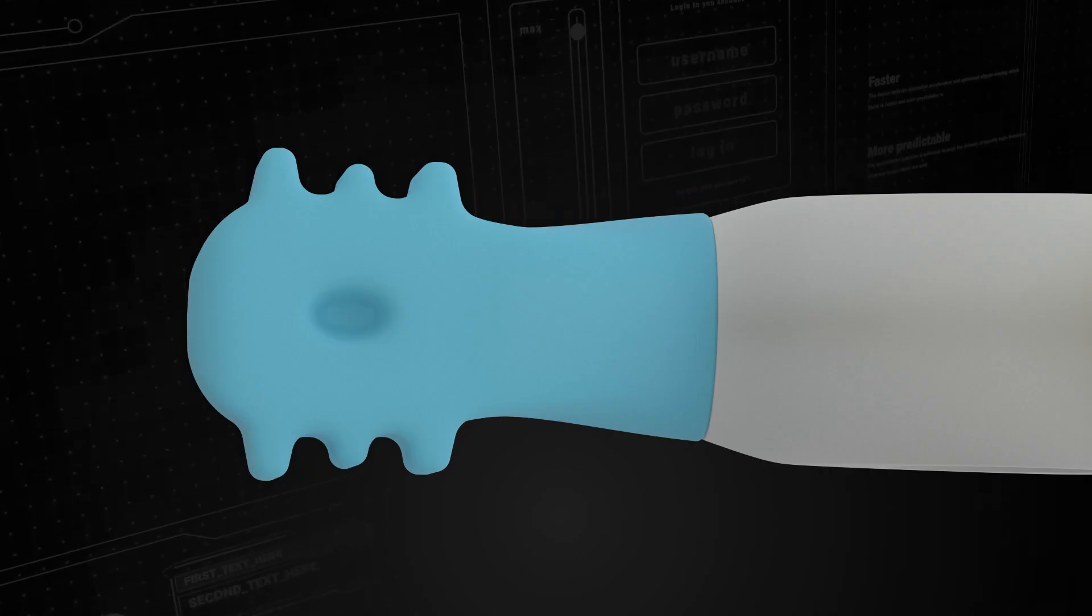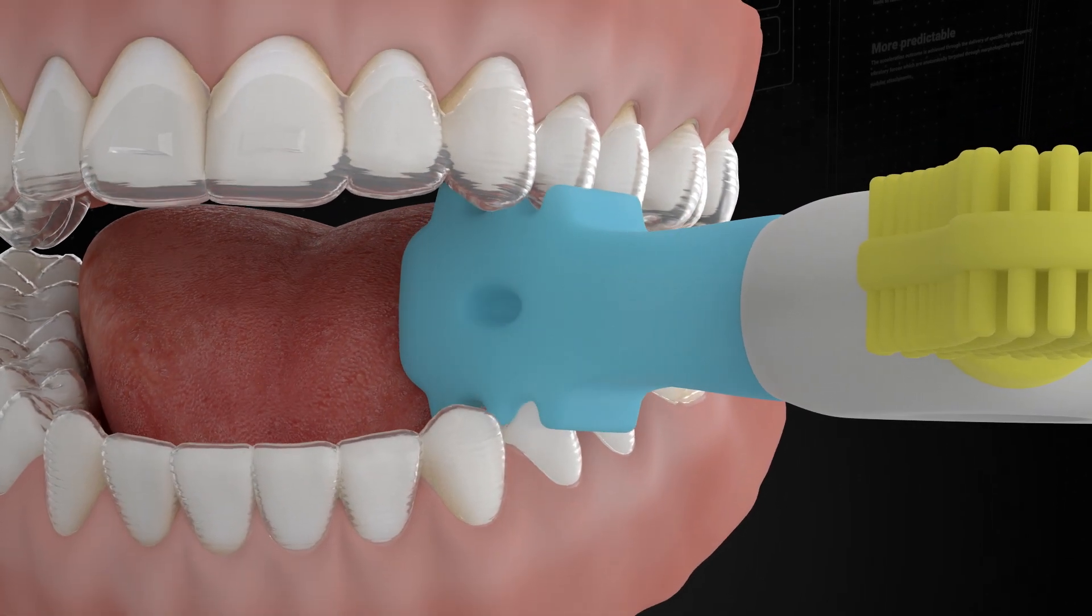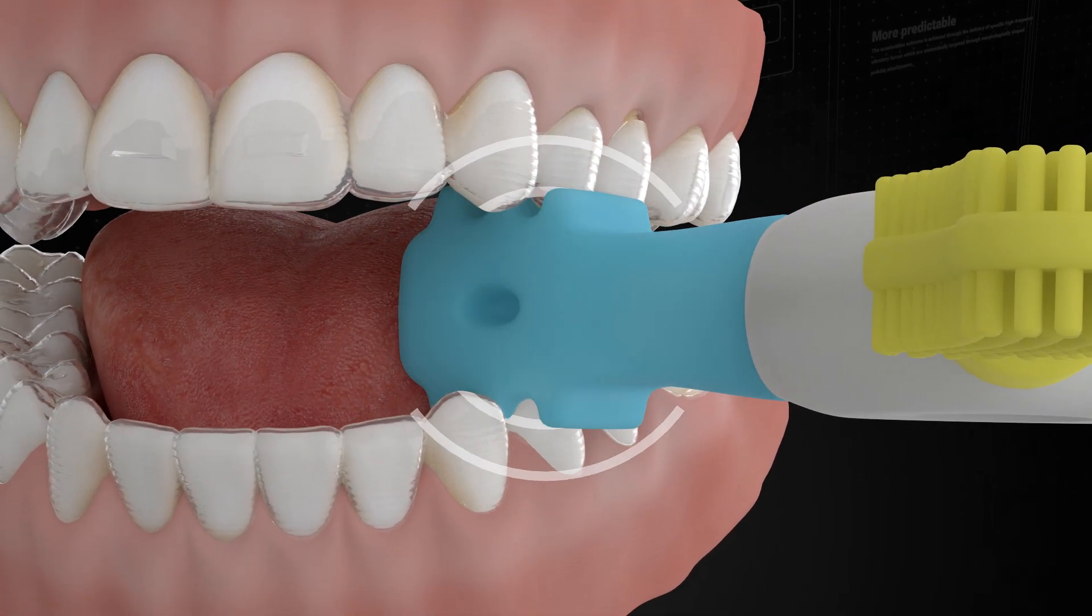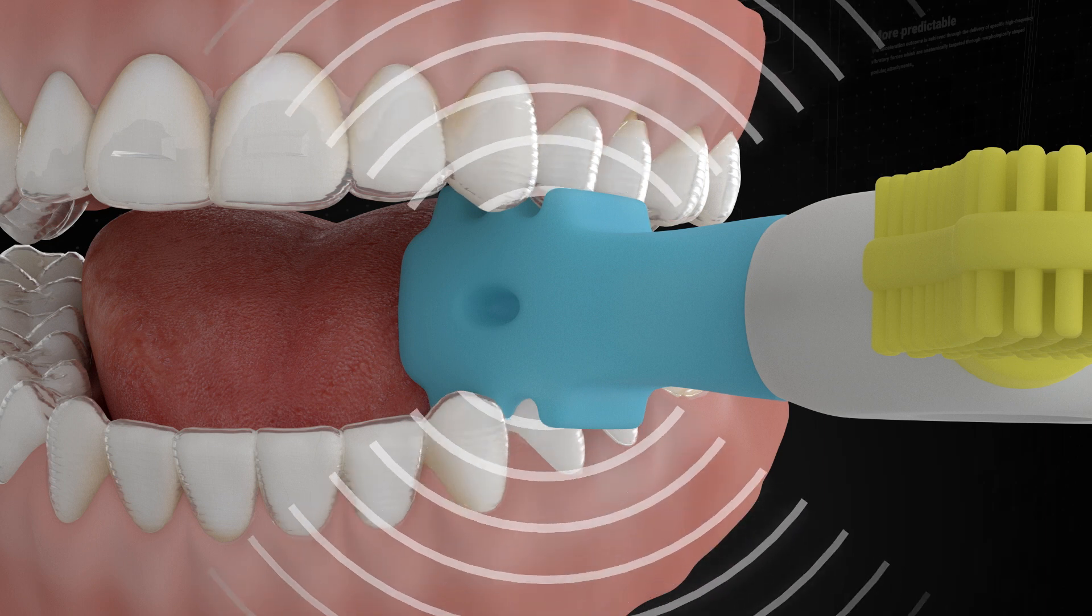Vibe 2 features the all-new EPS ridged attachment which is unique as it delivers vibratory forces in a buccopalatal orientation, which is essential to optimize osteoclastic activity in the premolar region where expansion is often prescribed.